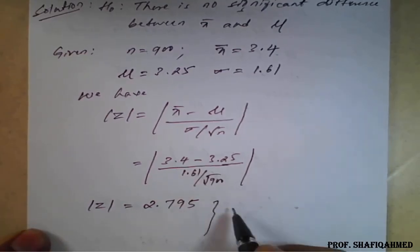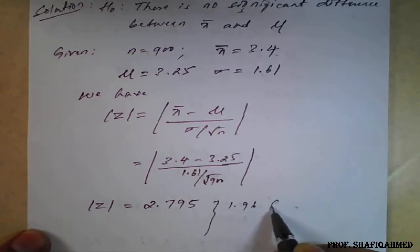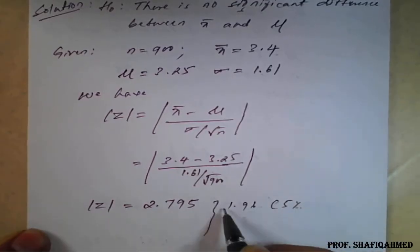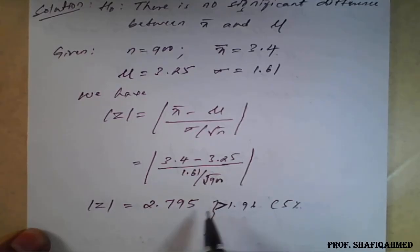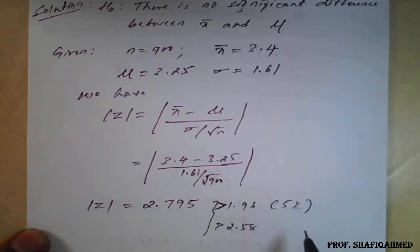1.96, that is for 5%. This value is greater. 2.795 is greater than 1.96 for 5%, as well as greater than 2.58 for 1%.